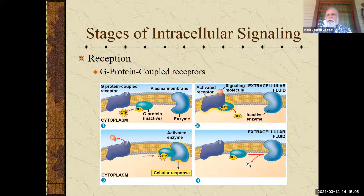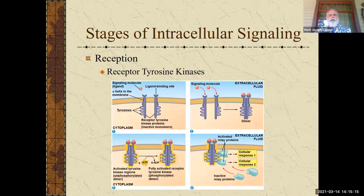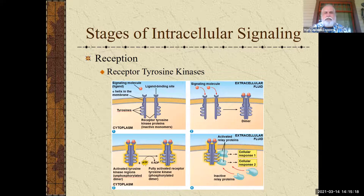An example of this is how epinephrine is sent from one cell to another. That would be an example of how G protein coupled receptors work.